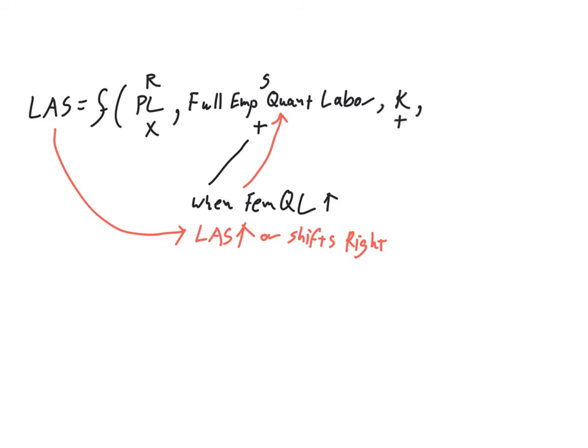Also, technology. These are both shift factors. An increase in technology will also shift long-run aggregate supply to the right. They move together. Our final shift factor is natural resource stock, which is also a shift factor and also directly related to LAS.